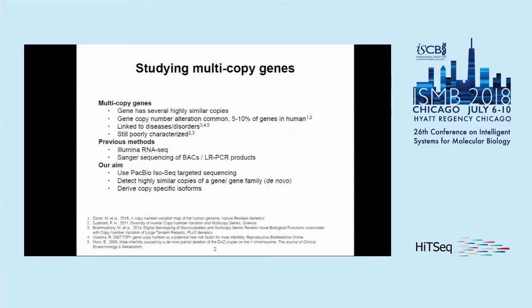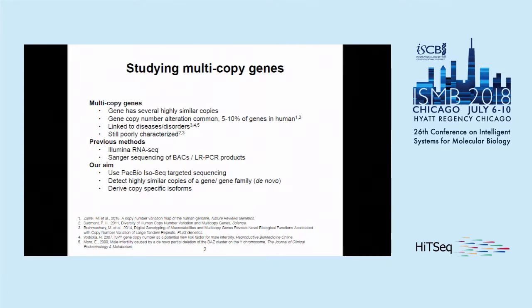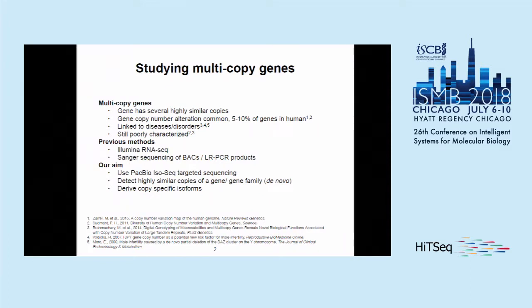However, the distinct sequences of these gene copies are still relatively poorly characterized due to high sequence identity. Previous methods to assay these sequences have included Illumina RNA-seq or Sanger sequencing. With Illumina RNA-seq, you cannot phase variants that exist at a distance larger than the read length, and Sanger sequencing is generally slow and expensive. Our aim is to use IsoSeq sequencing to fully phase the different transcripts from highly similar copies and ultimately distinguish them and assign transcripts to distinct gene copies.